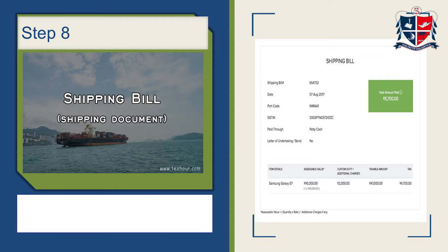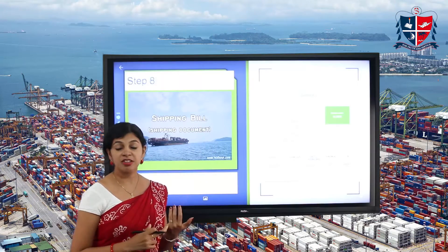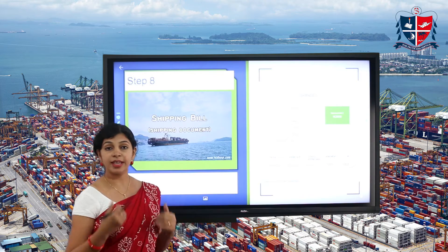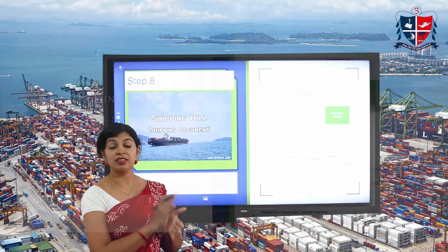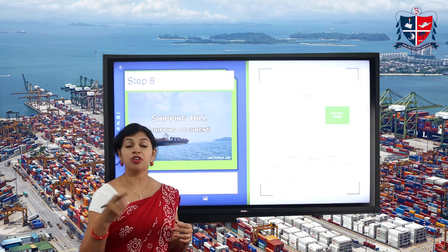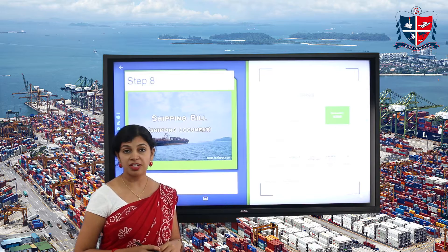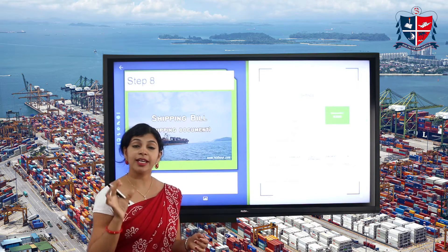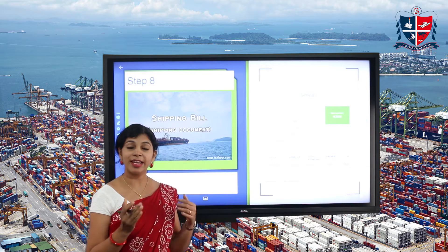From here onwards, the documentation process begins. If you have completed all these processes — obtaining registration with DGFT and EPC, finding an importer, sending goods for inspection, and getting an insurance certificate — the first phase is over. Now we move on to the second phase. Step eight involves the shipping bill. Your goods have reached the marine port or airport for shipment, and you may need a CNF agent to store the goods in his warehouse until they are shipped.